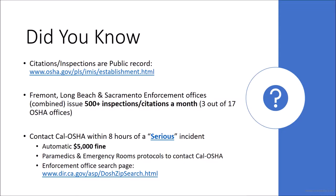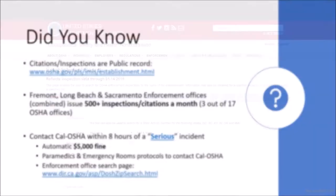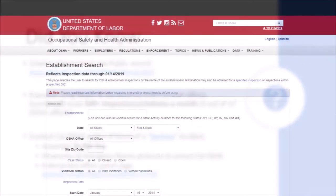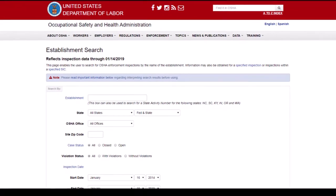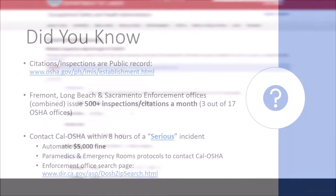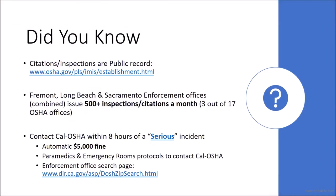In the next few slides, we will review several did-you-knows as well as frequently asked questions. First, OSHA citations and inspections are public record and can be accessed at the OSHA website. So if having a clean safety record is required to bid on certain projects, then maintaining a proactive safety program is imperative.